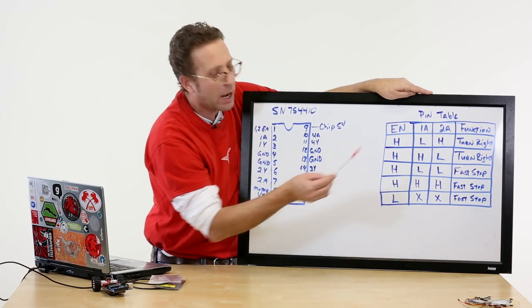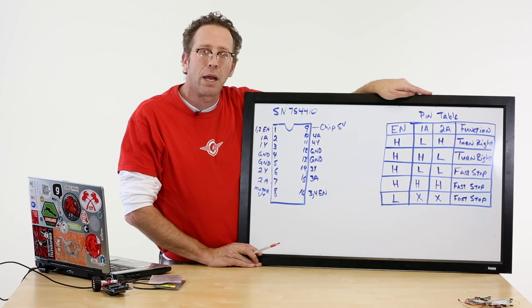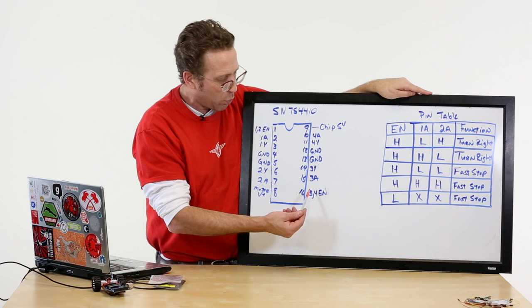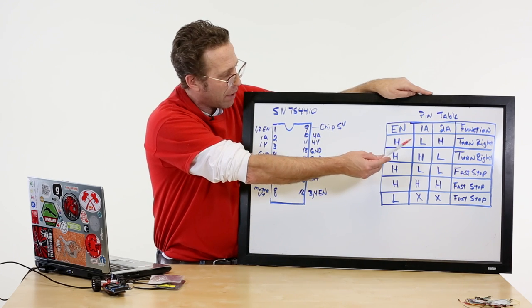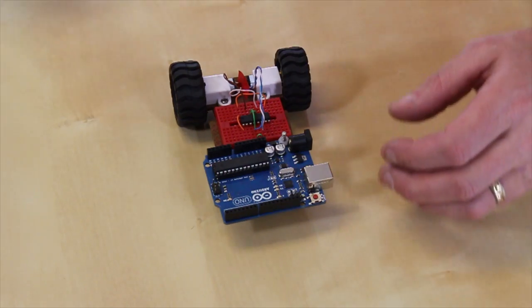And if this is low, it doesn't matter what happens, everything shuts off. It's the same for the opposite side on the truth table. So this side of the chip will run another motor with exactly the same truth table, except here it's going to be 3 and 4 instead of 1 and 2.